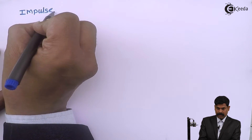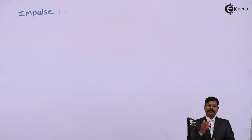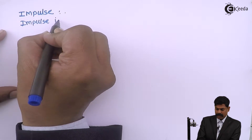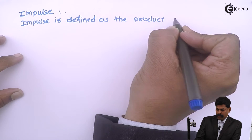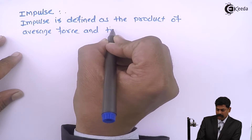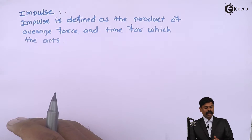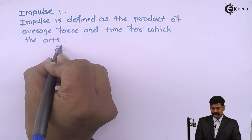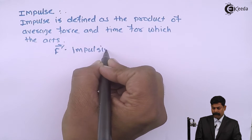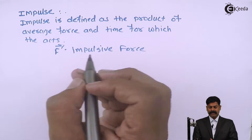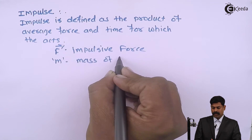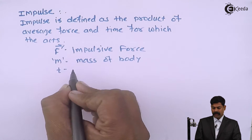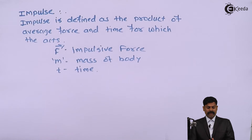The next definition is impulse. Impulse is defined as the product of average force and the time for which the force acts. Consider the impulsive force F acting on a body of mass M for a short time T. Because of this impulsive force, the velocity of the body changes from initial velocity to the final velocity.